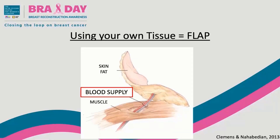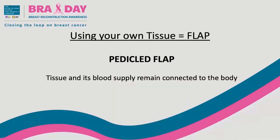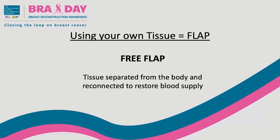Using your own tissue means using a flap, which allows the surgical transfer or transplantation of skin and fat, with or without muscle, from one part of the body to another. The flap is transferred with its blood vessels to supply nutrients to the tissue. The flap is called pedicled when the tissue and its blood supply remain connected to the body and are transferred to the chest. These pedicle flaps are shorter surgeries compared to their more complex counterpart, the free flap, where the tissue and blood vessels are disconnected from the body, transplanted, and reconnected in the chest. Free flap surgeries are the longest of the reconstructive options.